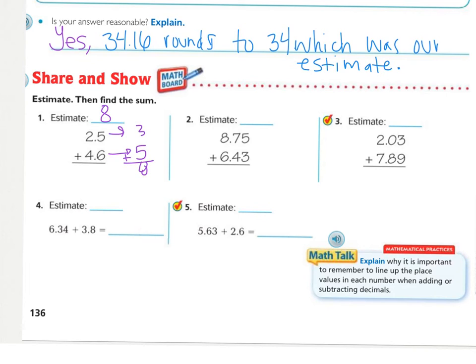For number 1, I did my estimate — my estimate is 8 — and now I will just add them like normal, remembering to bring down my decimal.